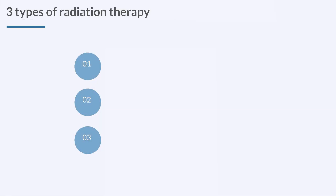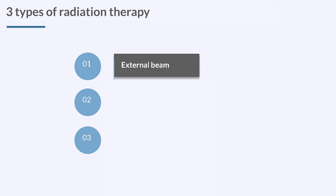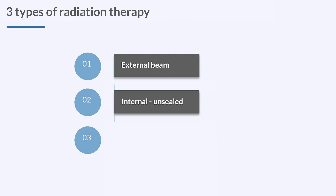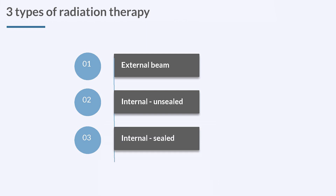Let's review the three types of radiation therapy. There's external beam radiation, internal unsealed radiation, and internal sealed radiation. These are the three types of radiation that a patient might have. What are some of the side and adverse effects of radiation therapy?